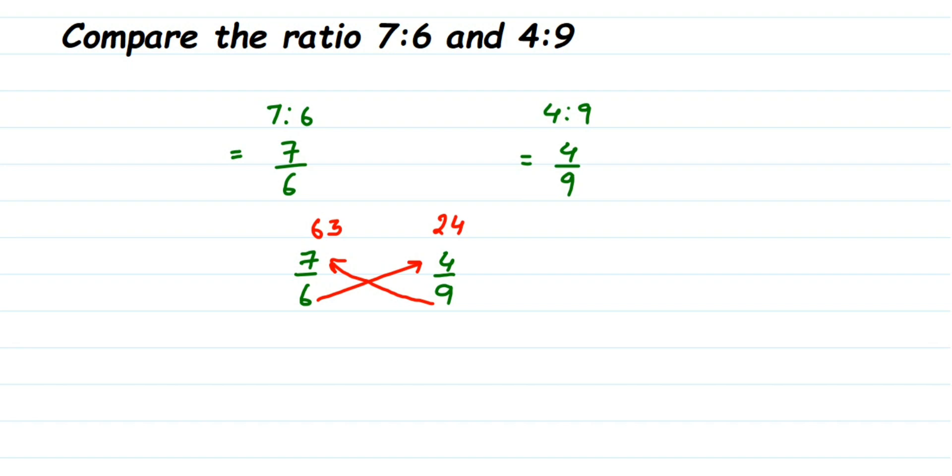So this whole fraction, that is 7 by 6, will be greater than 4 by 9. That's it. It's very simple. If this fraction is greater, which means I'm going to convert back this into ratio: 7 is to 6 is greater than 4 is to 9.